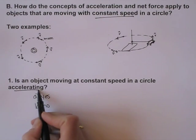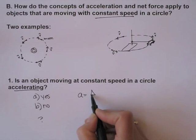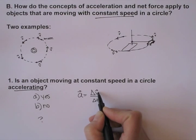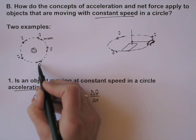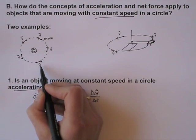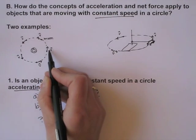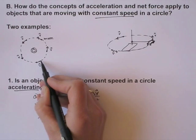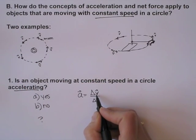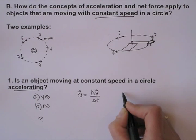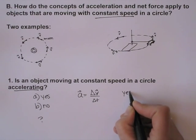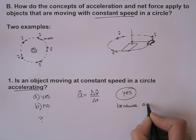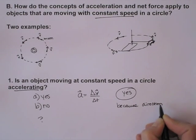It's accelerating if it has a change in velocity. Acceleration is change in velocity per unit time. Is the velocity changing? Well, velocity has a magnitude and a direction. The magnitude is constant — the length of these velocity vectors are the same — but the direction is changing. So the velocity is changing, and we do have an acceleration. The answer is yes, because the direction of the velocity is changing.